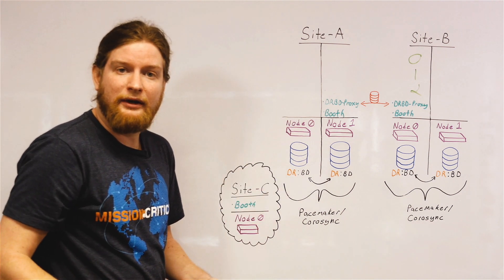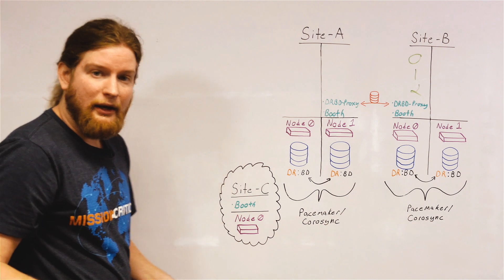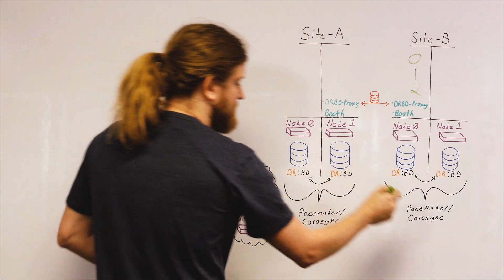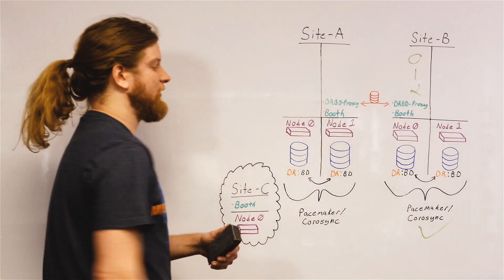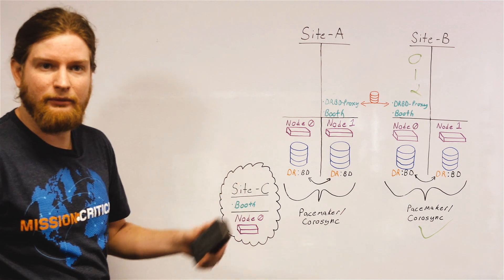Well, then we can effectively determine that site A is down. And we can grant a ticket to site B. Site B can run services.